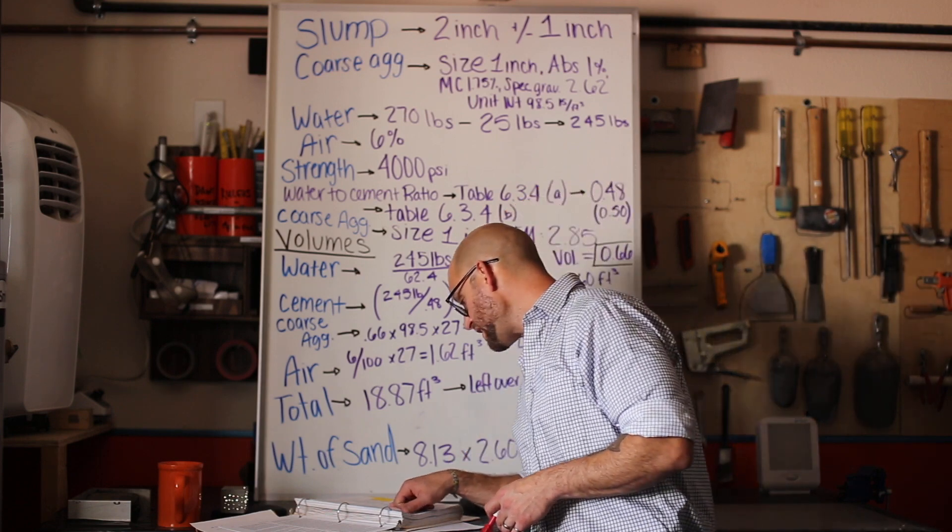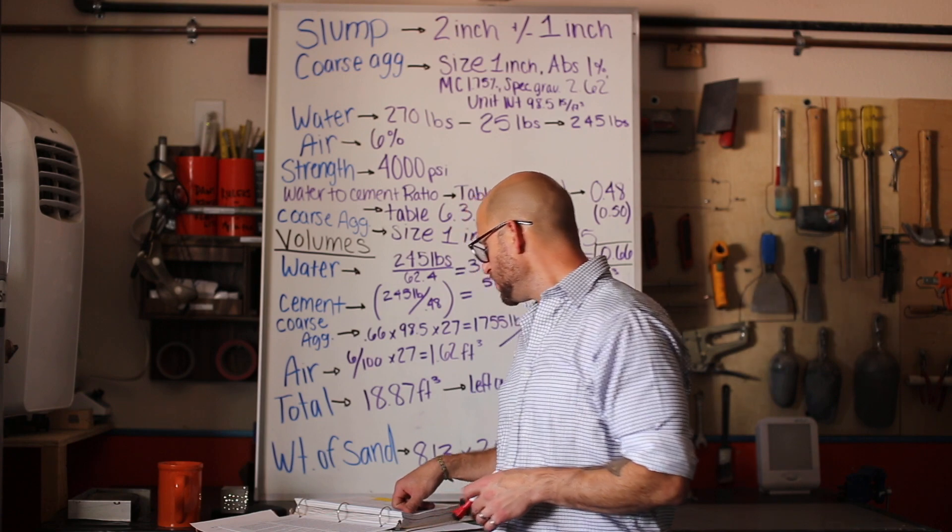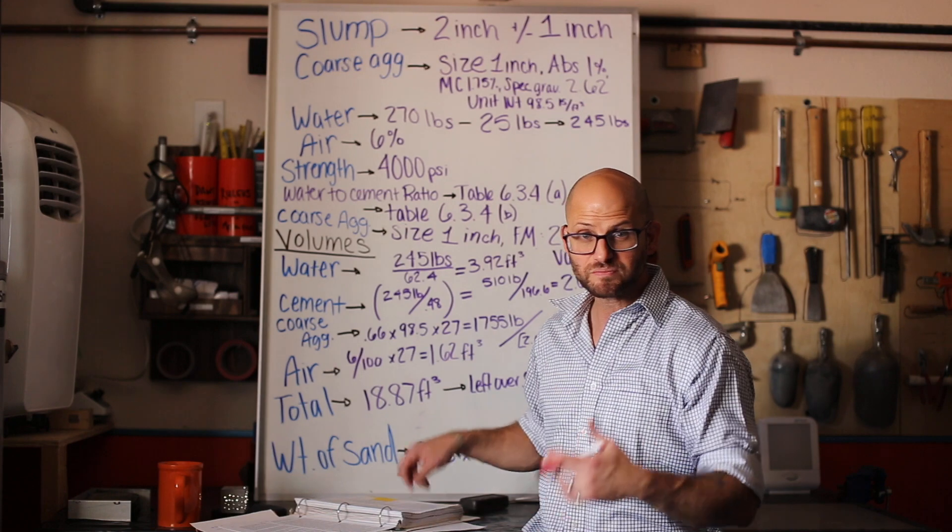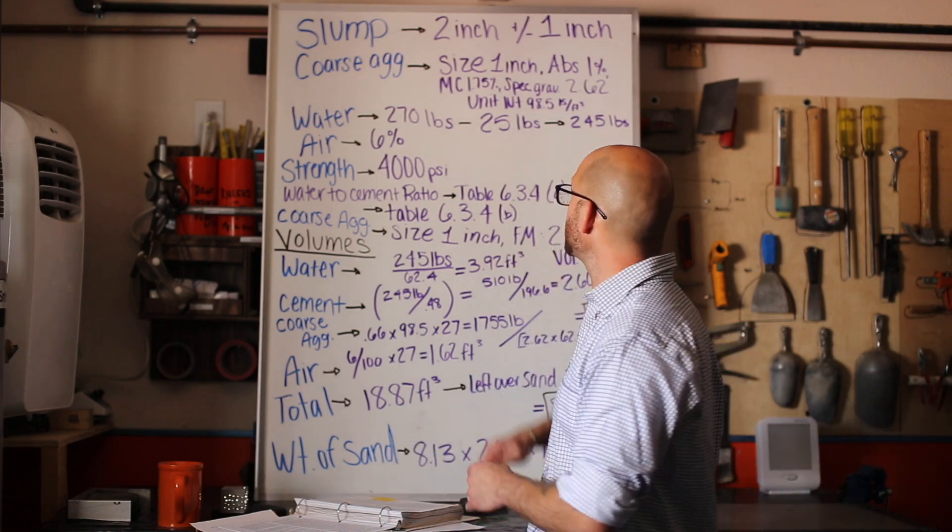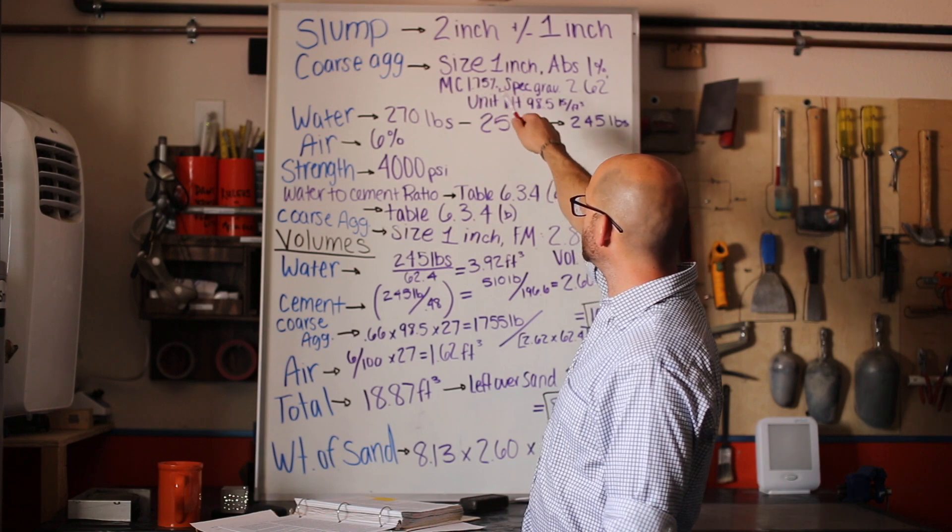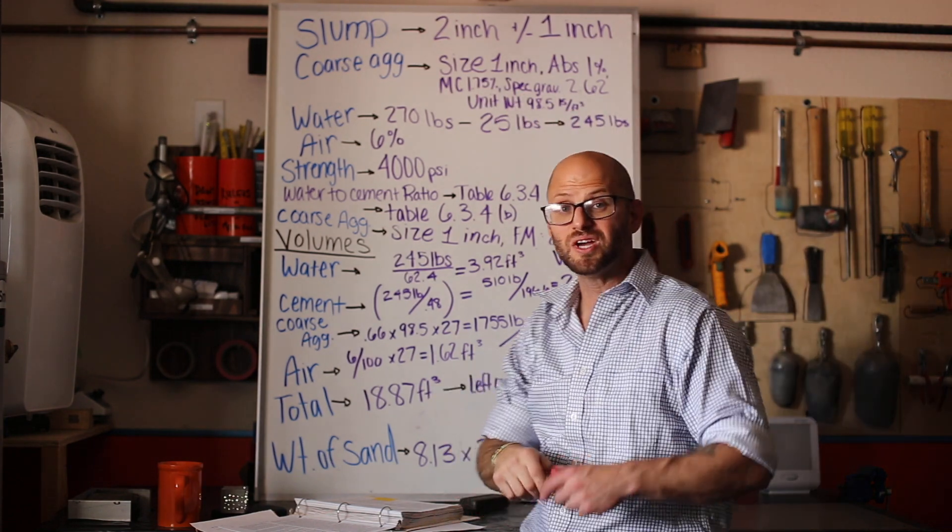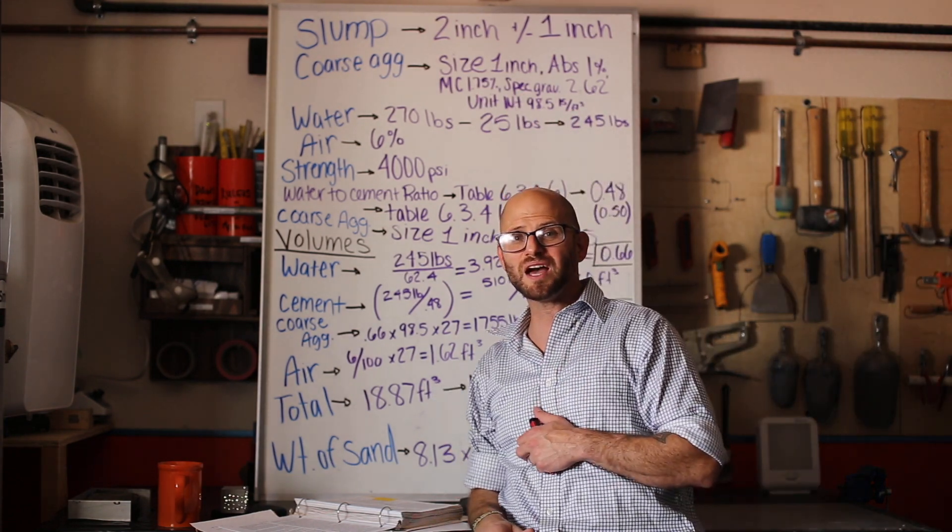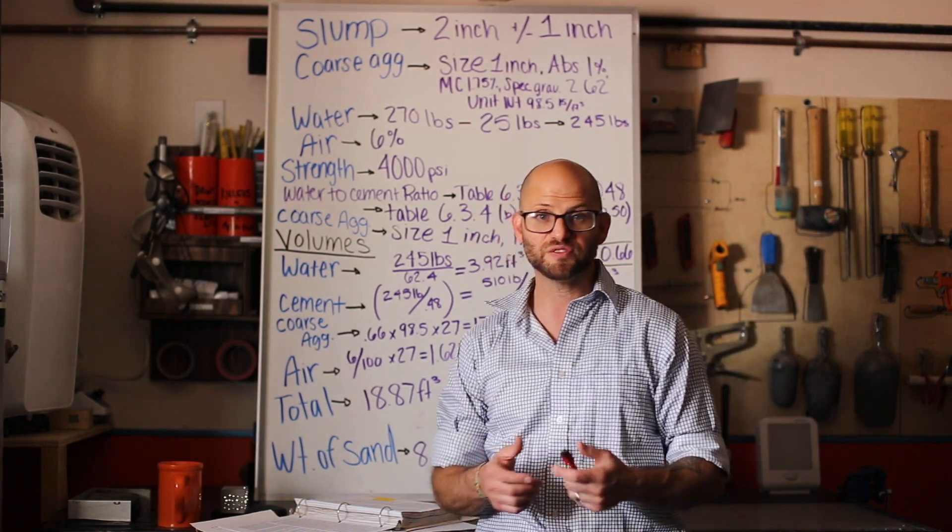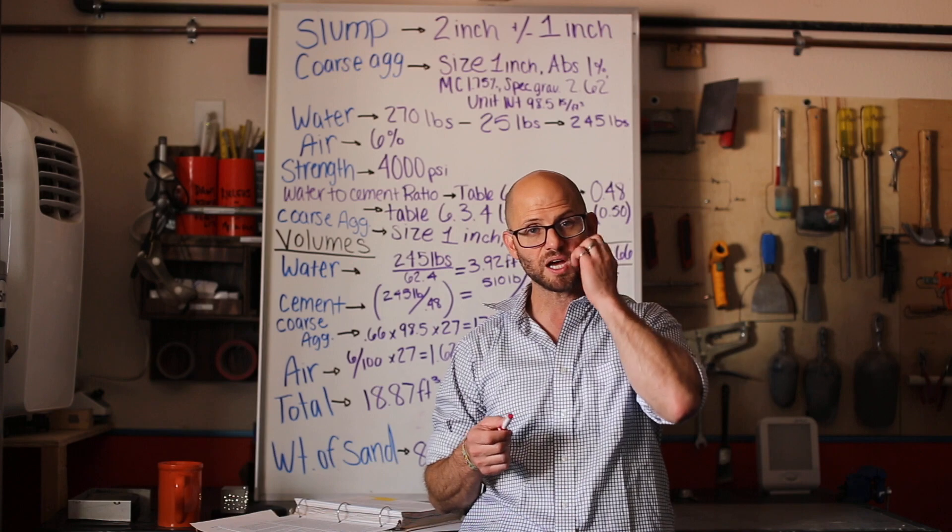Getting into ACI 211, a slab on grade, you go into table 6.3.1. It's the first step and you really aren't thinking, you're just picking out. It actually tells you for a pavement and slab your maximum and minimum slump three to one inches respectively, and that's the first place that we start.